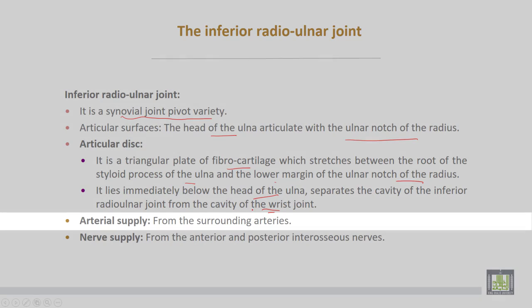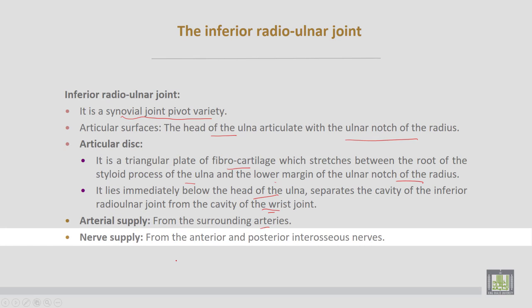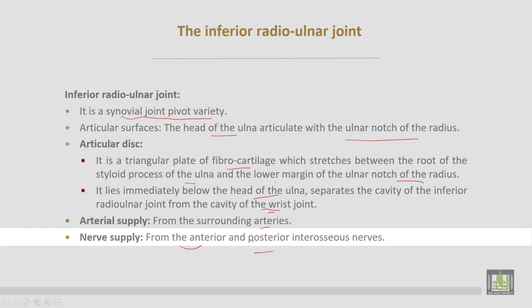Arterial supply comes from the surrounding arteries. Nerve supply comes from the anterior and posterior interosseous nerves.